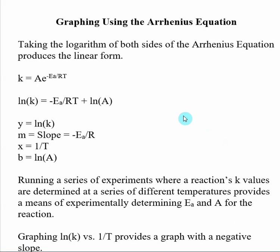One of the most classic uses of the Arrhenius equation is to determine the energy of activation using experimental data. You go into a lab, determine K for a reaction, and look at how K changes as you change the temperature. Typically you do it at room temperature, maybe a warm water bath and an ice bath. From those different temperatures and K values, you can make an Arrhenius plot and find the energy of activation for your reaction.